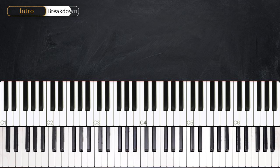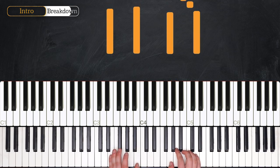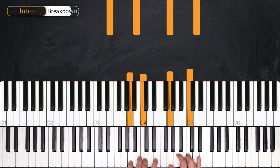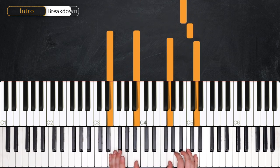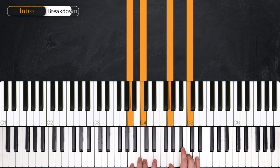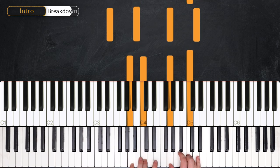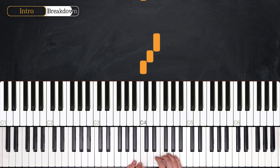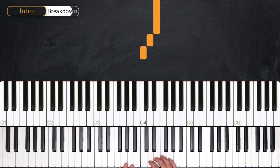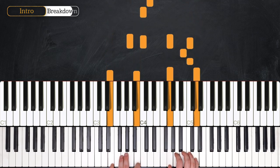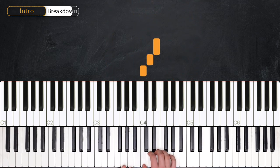Then, just like in the first part of the intro, we move to our E-miner 7. And then to our A-miner 7. So that's E-miner 7, C, D, C on top of the A-miner 7. We have that C, D, E triplet again. So, 1, 2, 3, 4, and 1, 2, triplet.